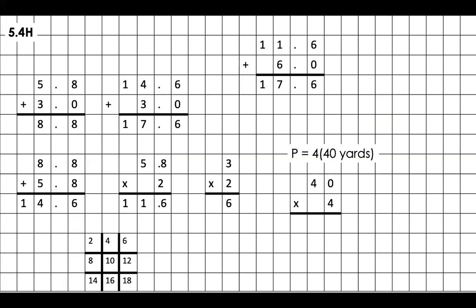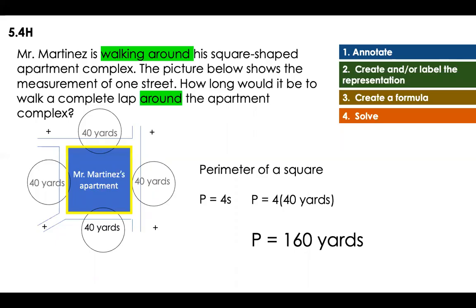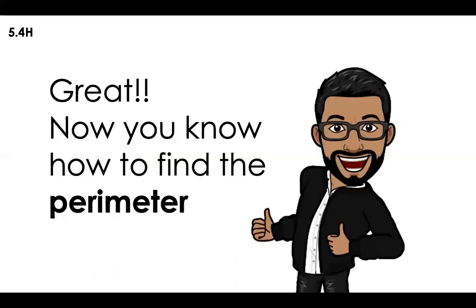Let's solve it very quickly. Here is 40 times 4. I'm going to create a tic-tac-toe for the 4 because I always like to make these timetables in my head. 4 times 0 is equal to 0, and then 4 times 4 is equal to 16. My answer, in this case, is going to be 160 yards. How long will it be to take a complete lap? It will be 160 yards. Great.